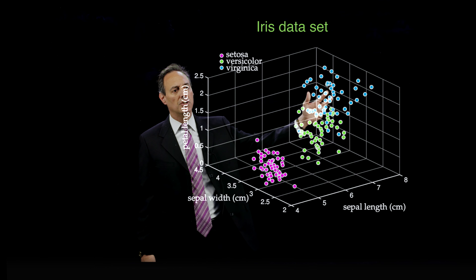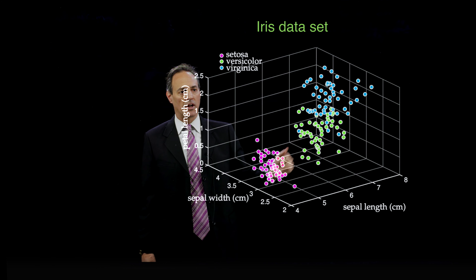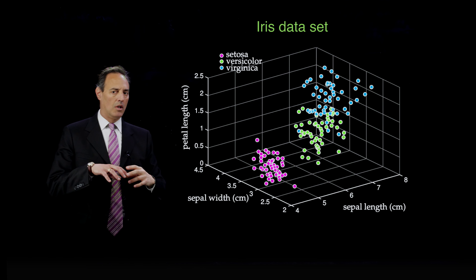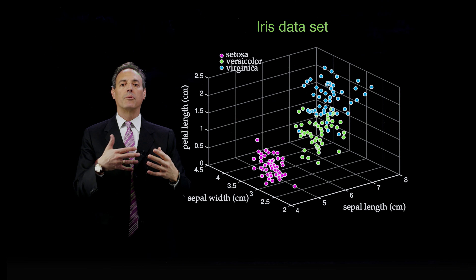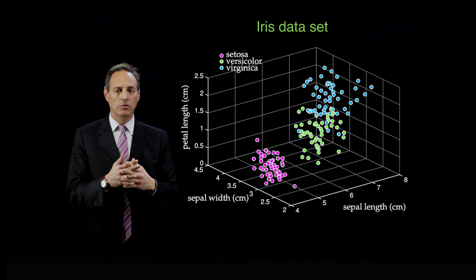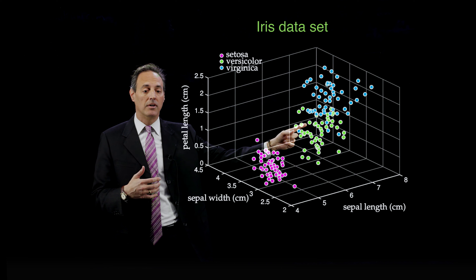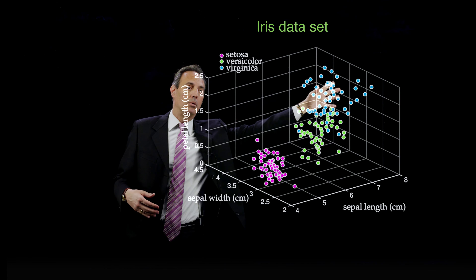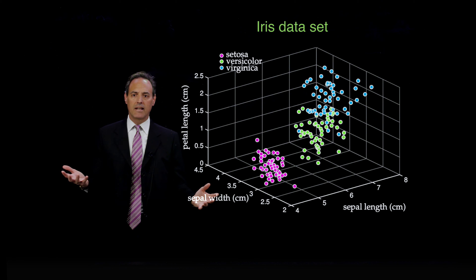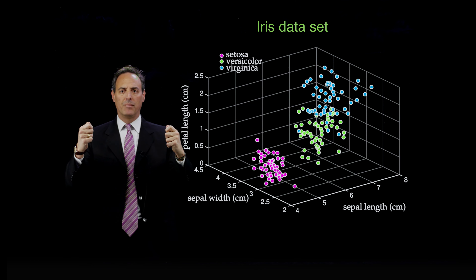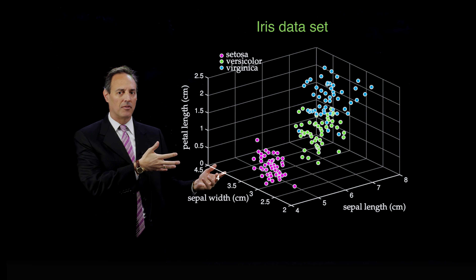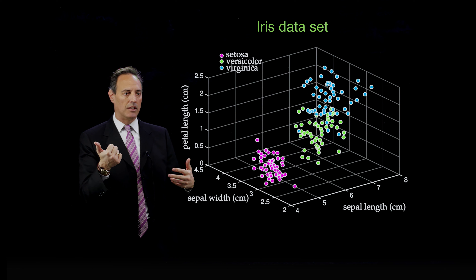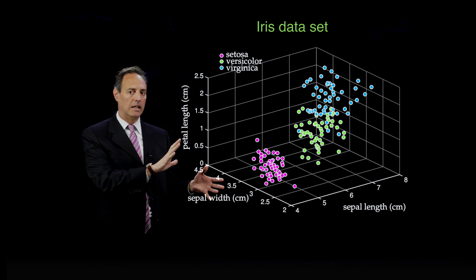The versicolor and virginica are a little closer to each other, but you clearly see green down here and blue up here. You can see these three distinct clusters. The clusters don't have to be mutually exclusive — there is overlap in places. However, there is a dominant structure clearly visible around where the greens, blues, and magentas are. All I did was take four measures of these irises and plot them as different colored balls, and it already gives you the ideas of classification and clustering.